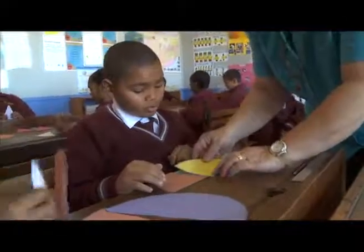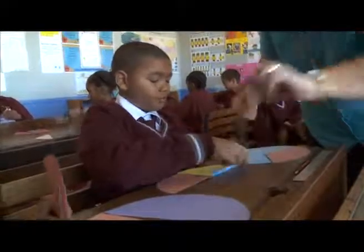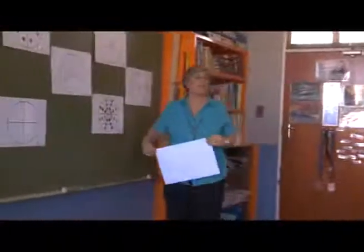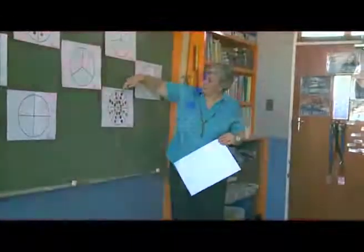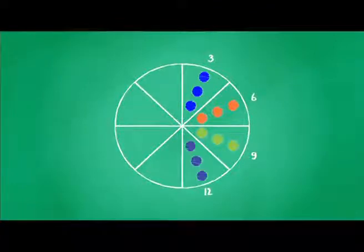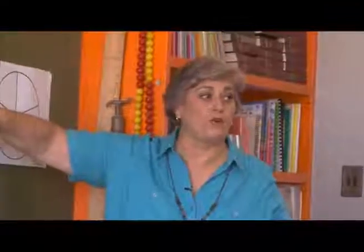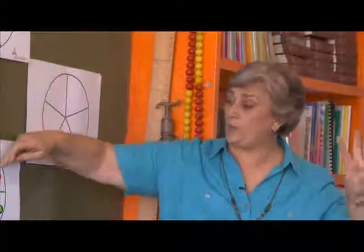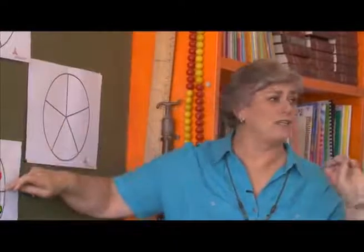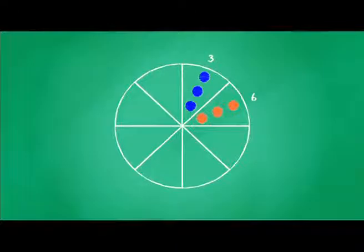Is that the same size? All right. Turn it around. Let us count in threes: three, six, nine, twelve, fifteen, eighteen, twenty-one, twenty-four. So the whole is twenty-four. And one eighth of twenty-four is? Three. Two eighths of twenty-four is? Six. And three eighths of twenty-four is? Nine.